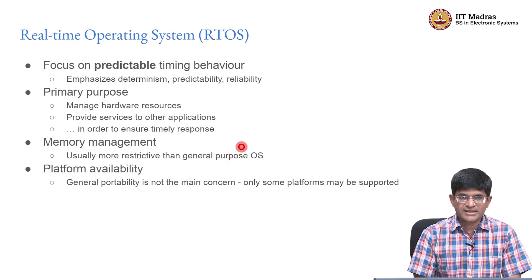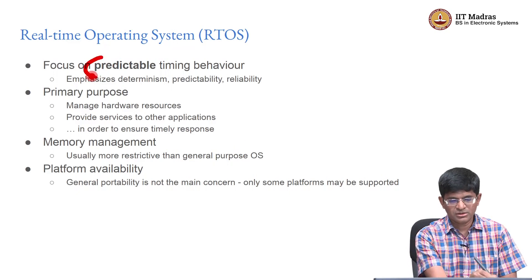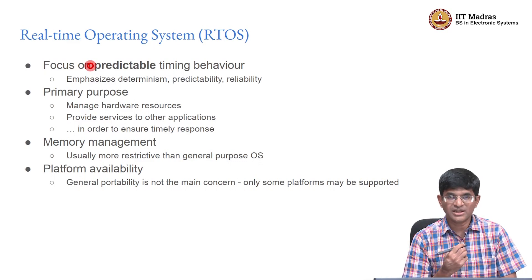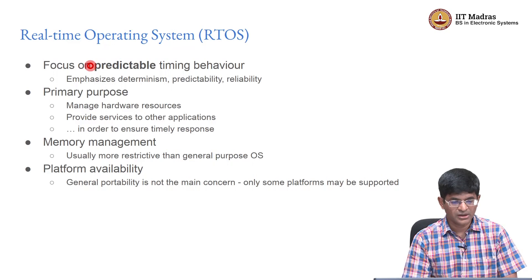With all of that in mind, we can think of what a real time operating system looks like. The primary purpose of the OS remains the same — managing resources — but the focus is on predictable timing behavior. The design of an RTOS emphasizes determinism, predictability, and reliability. Determinism means things happen as expected within a given amount of time. Predictability means you can predict in advance what the response will be. Reliability means that every time you perform a certain set of actions, you get the same behavior. These requirements are interrelated — reliability and predictability go hand in hand.